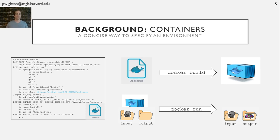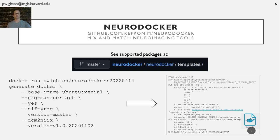Now, while Docker is great at specifying environments, it lacks a framework for easily reusing individual components. While multi-stage builds partially alleviates this problem, a tool to help mix and match software versions and create Docker files would streamline the process considerably. This is where NeuroDocker comes in. NeuroDocker is a great open source tool to help pick and choose exact versions of software packages and easily create Docker files.